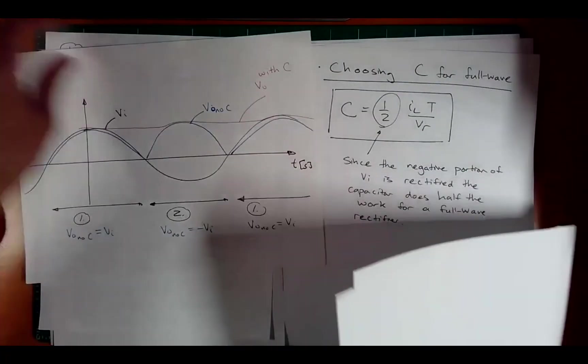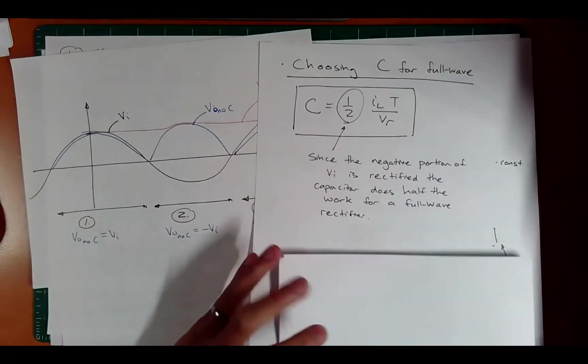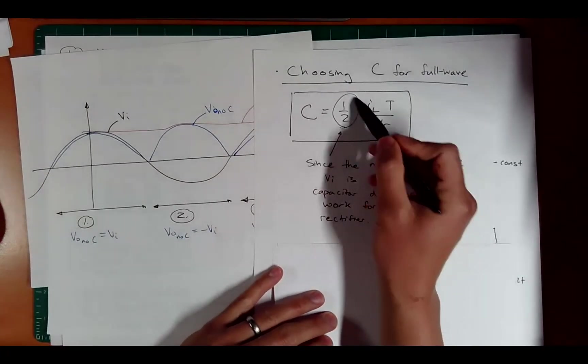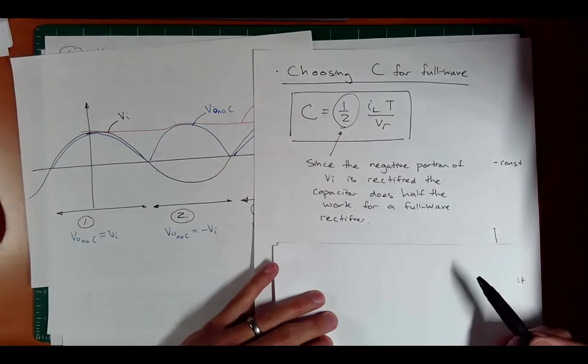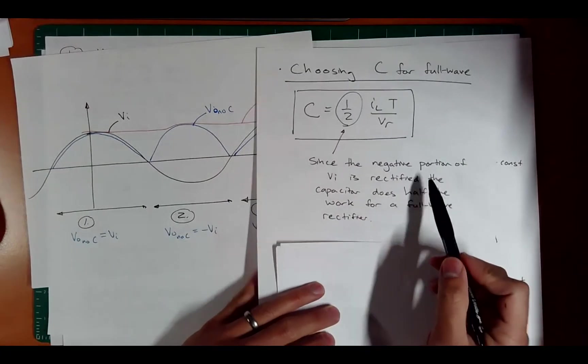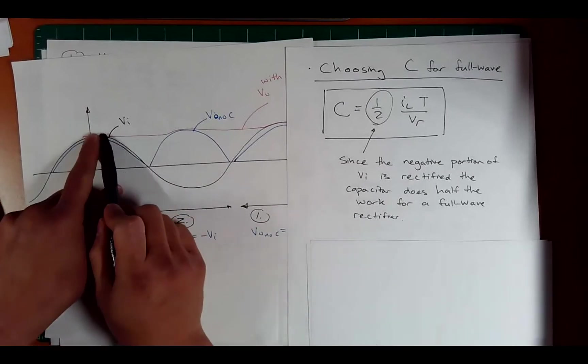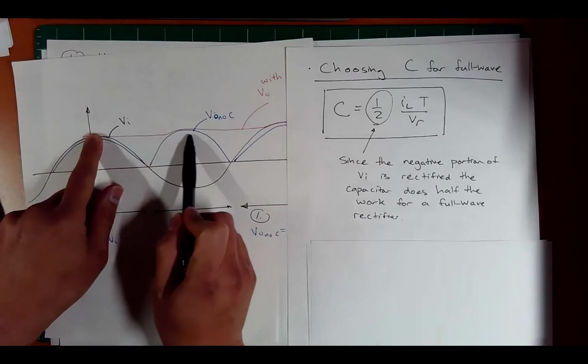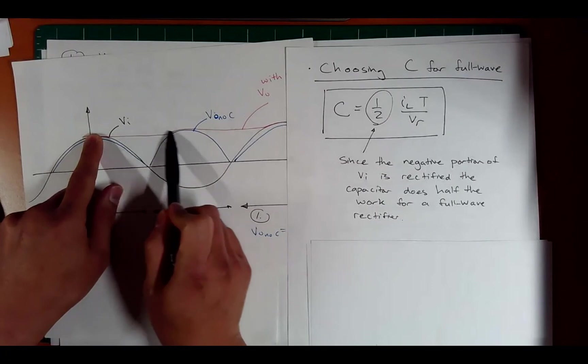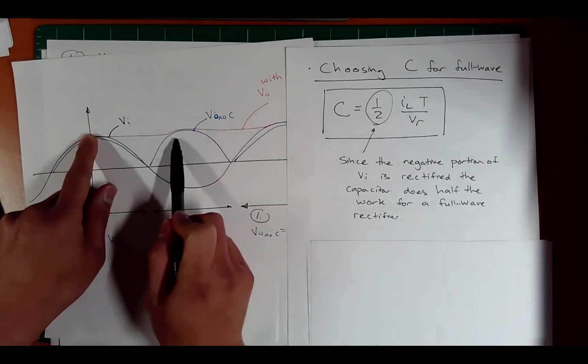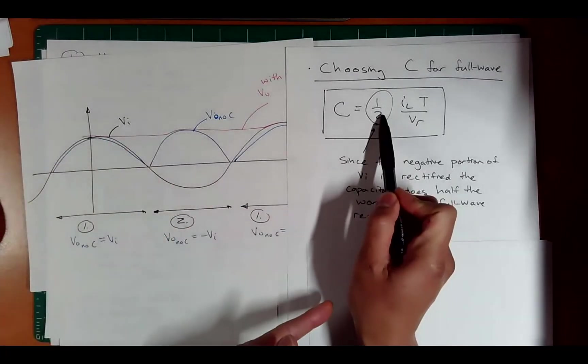The capacitor equation is going to be nearly identical as the previous full wave. The only difference is you're going to have a one half here. Since the negative portion of VI is rectified, the capacitor has to do half the work. So instead of the capacitor having to go all the way and handle delivering current all the way for this one period, it only has to do it for half a period. And so that's why we can put a half here.